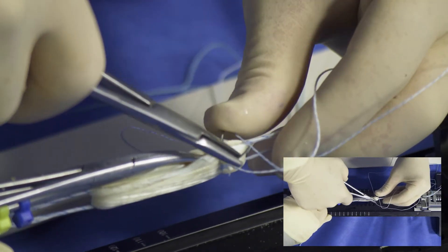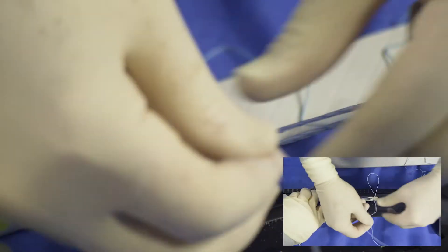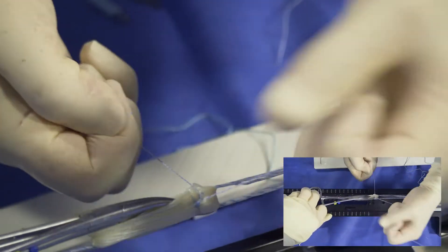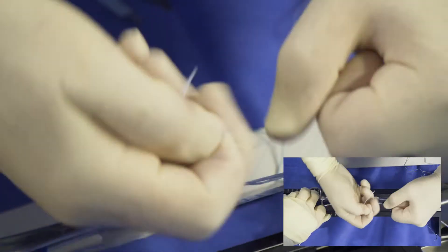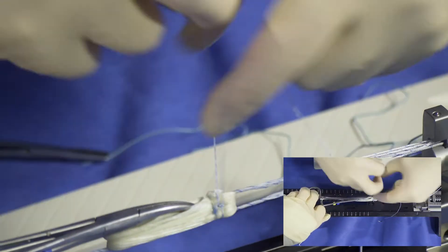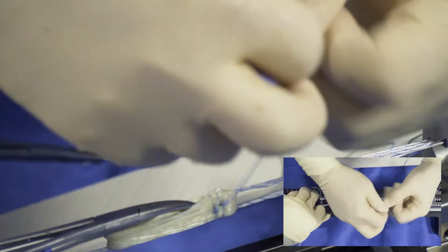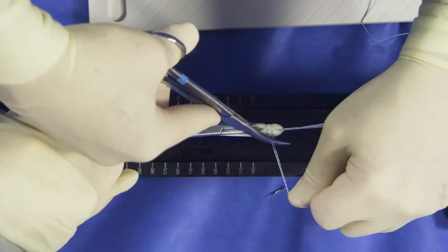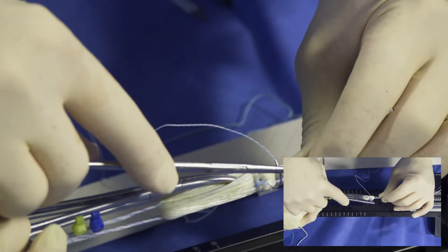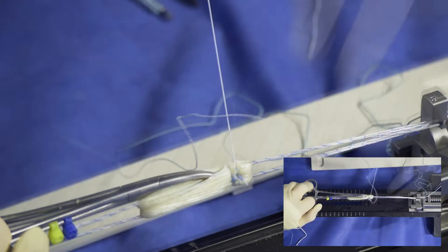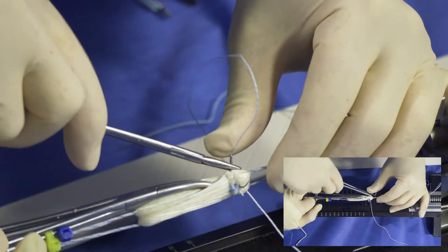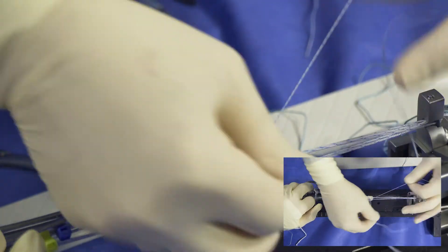This section of the graft will be the portion that will be buried inside the tibia. It is important not to penetrate the ultra button cradle or the ultra button will not tension properly during implantation.